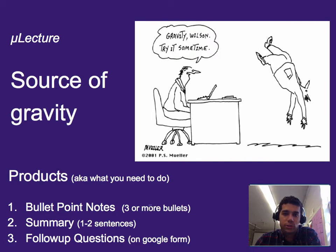Remember, microlectures are intentionally short, focusing on one objective or one kind of content standard. And this one, as always, you need three or more bullet points worth of notes, one to two sentences for a summary, and your follow-up questions on Google Forms.